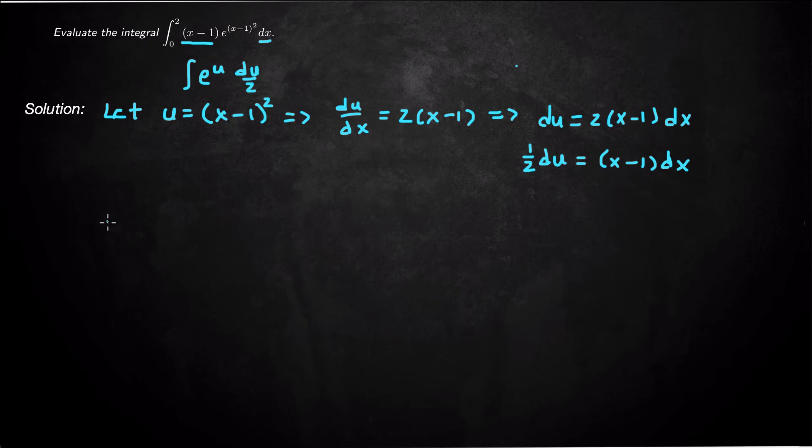We'll start with the upper bound. If x equals 2, what happens to the variable u? Well u equals (2-1)² which is 1² = 1.